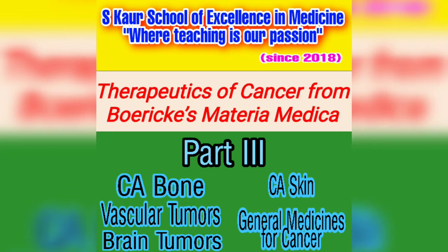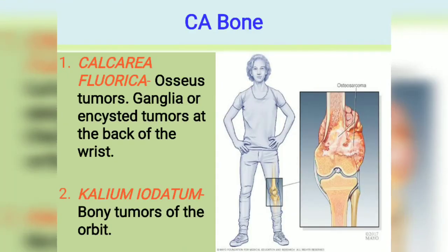If you have not seen the other two parts, please go through part one and part two in which we have already discussed a lot of cancers. So let's begin with CA bone — here there are two very important medicines.